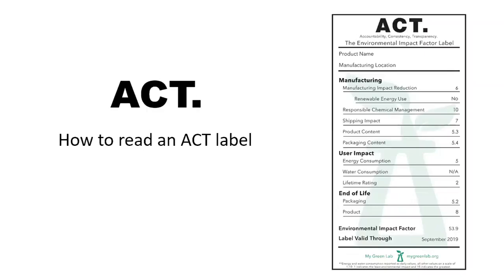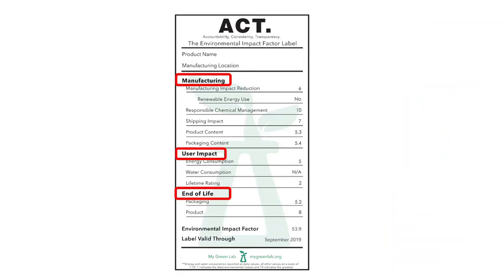Hi and welcome to the video 'How to Read an ACT Label.' An ACT label is an eco nutrition label for laboratory products that looks at the manufacturing, user impact, and end-of-life impact of products that are commonly found in the lab, including equipment, consumables, and chemicals.